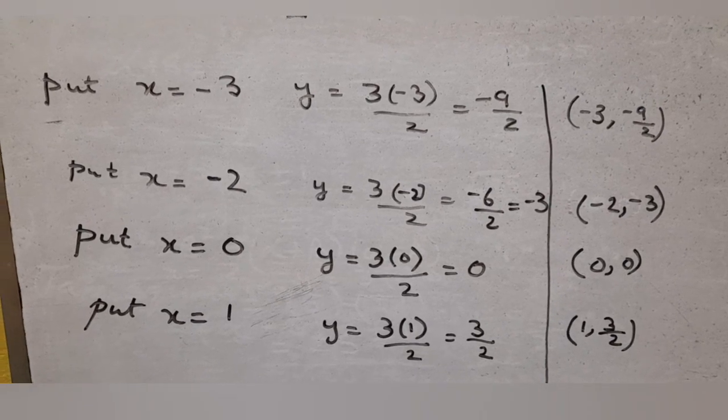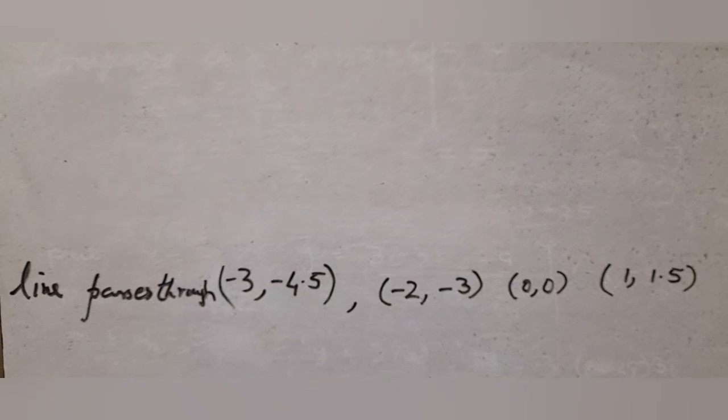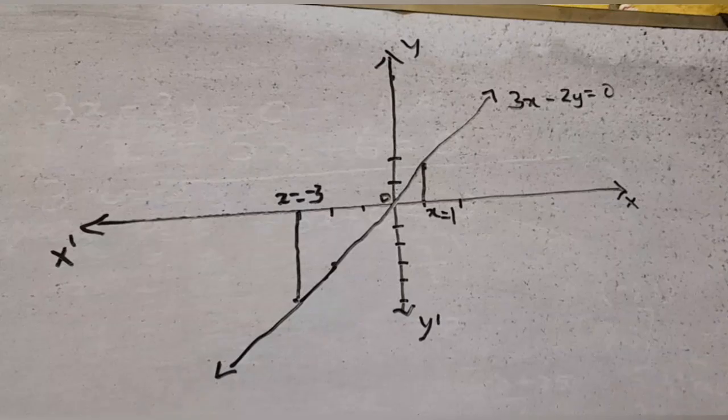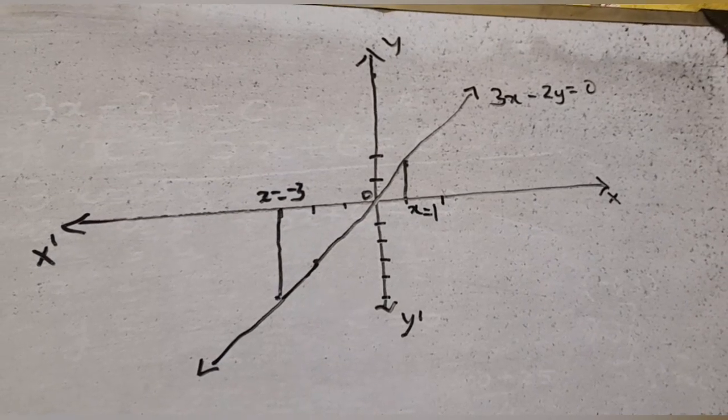Plot these points and draw the graph from x equal to minus 3 to x equal to 0. The line lies below the x-axis.